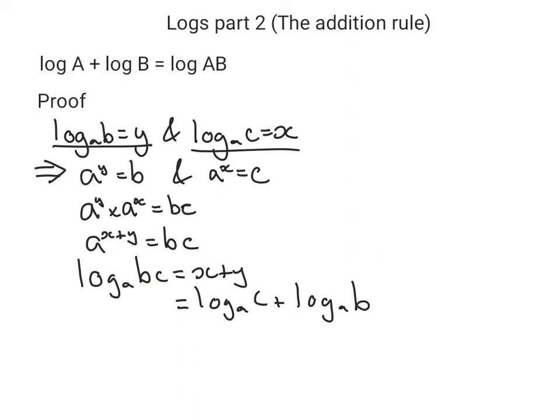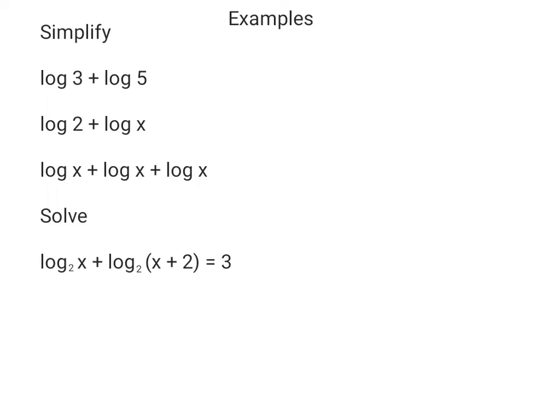So that proves our rule that log of b plus log of c equals log of bc. The first example we've got here is log of 3 plus log of 5, so we just get log of 3 multiplied by 5, which is log 15. The second one, log of 2 plus log of x, we just get log 2x.